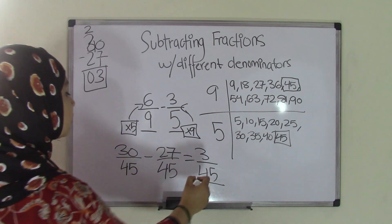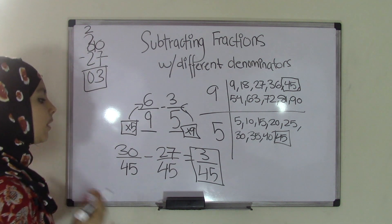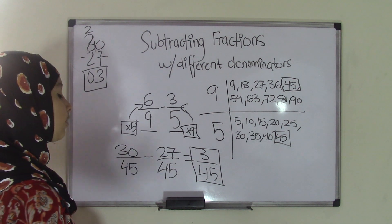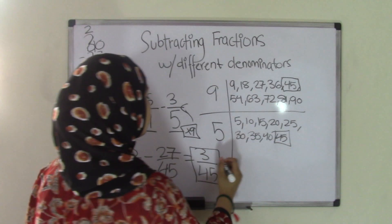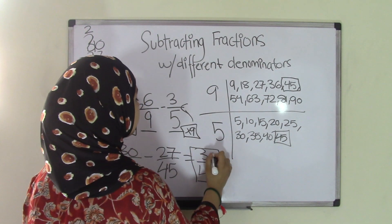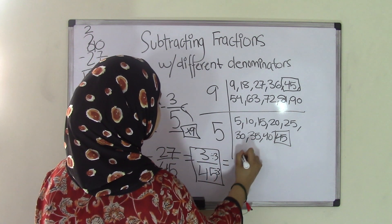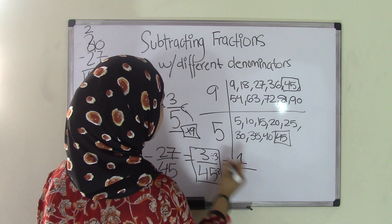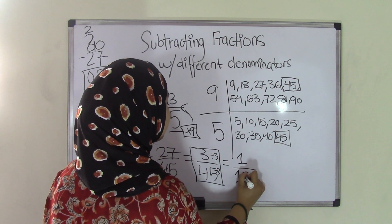So that means our final difference is 3/45. Now, keep one thing in mind. When you get a fraction or your answer, if you can simplify the answer, then always do so. So if you have 3/45, if you divide 3 by 3 and 45 by 3, you'll get an answer, a simplified term of 1. And 45 divided by 3 is 15. So 1/15.